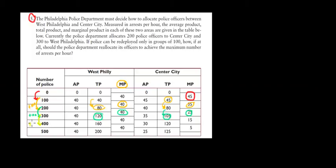Going from 300 to 400 officers: increasing by another hundred, total production in West Philly goes from 120 to 160 — an additional 40 arrests. If we put them in Center City instead, they would increase arrests from 105 to 120, an additional increase of only 15. Clearly better off in West Philly again.